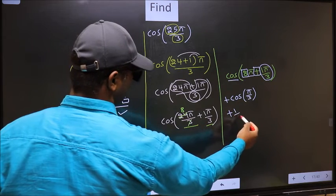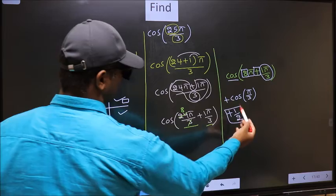So plus cos π/3 is 1/2. This is our answer.